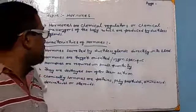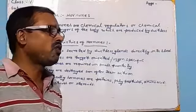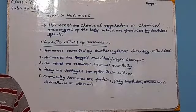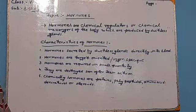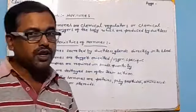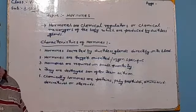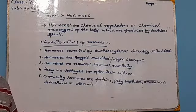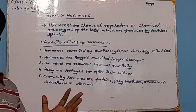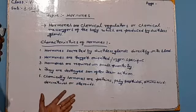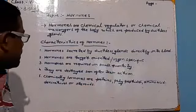Now let us look at the characteristic features of hormones. The first characteristic feature is that hormones are products of ductless glands or endocrine glands, because hormones are produced by endocrine glands. The second characteristic feature is that hormones are target-oriented or organ-specific, because hormones circulate throughout the body via blood but do not affect every part — they affect only a specific part.